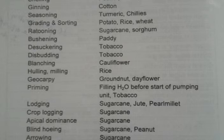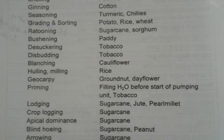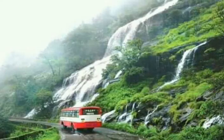Lodging is in sugarcane, jute and bajra. Crop logging in sugarcane along with apical dominance. Blind hoeing is used in sugarcane and peanut. Arrowing is again used in sugarcane.